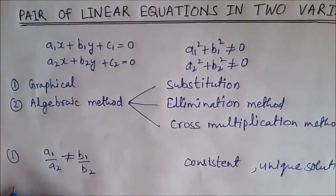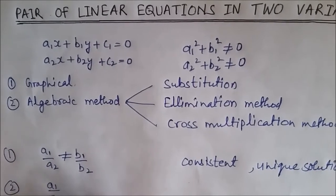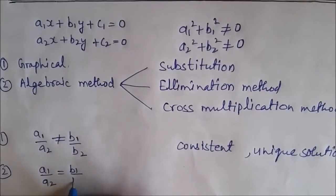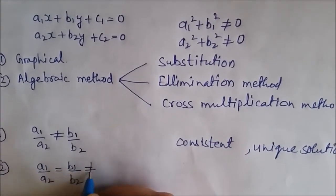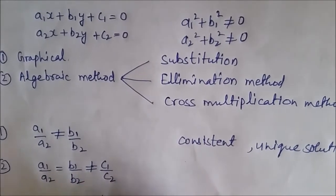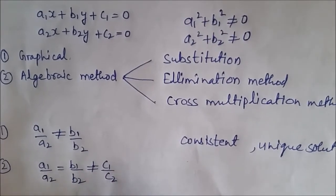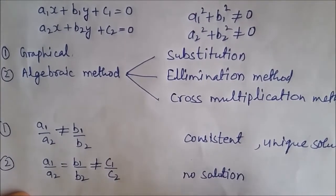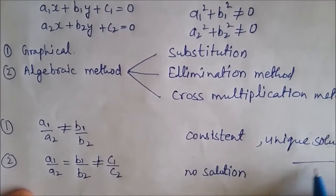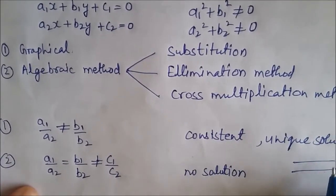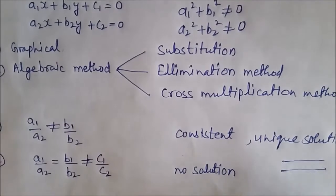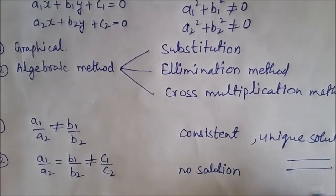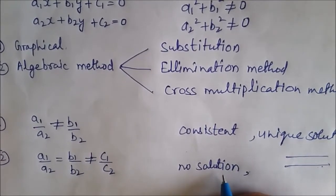The second case arises when a1 upon a2 is equal to b1 upon b2 but is not equal to c1 upon c2. In this case, the lines are parallel and the pair of equations has no solution. The two straight lines represented by the linear equations will meet nowhere, so there is no solution and the system is called inconsistent.